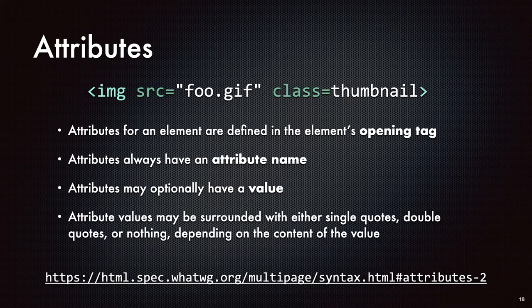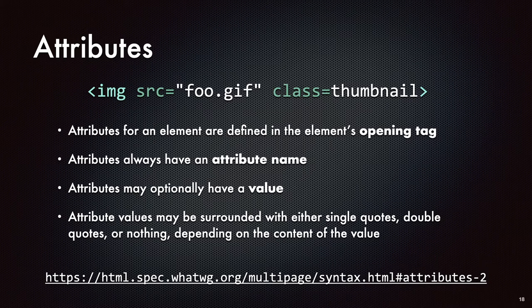Attribute values can be surrounded by single quotes, double quotes, or nothing, depending on the content of the value. If you just had foo.gif, the interpreter would handle that without quotes. But if your attribute value needed to have spaces within it, because the space would be interpreted as the end of an attribute, you would have to surround the entire content with quotes. This would apply to something like an alt attribute on an image.